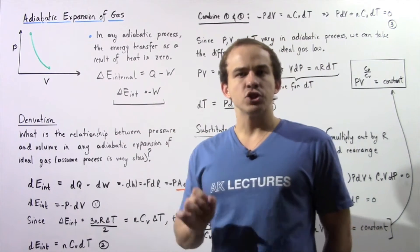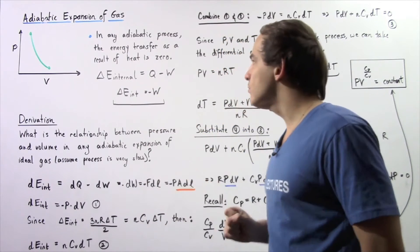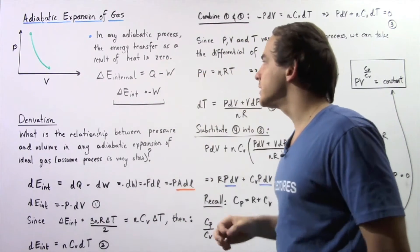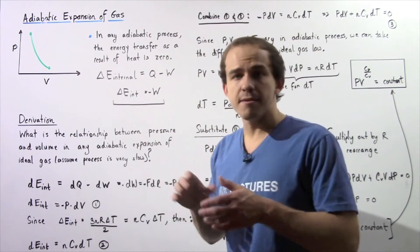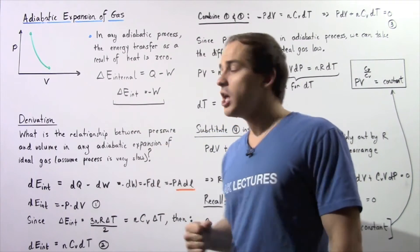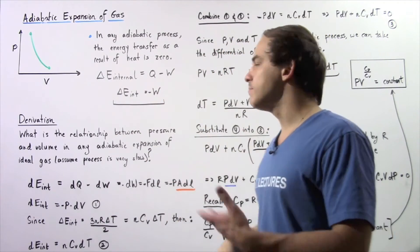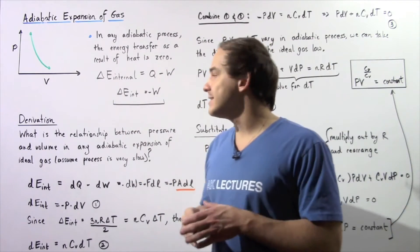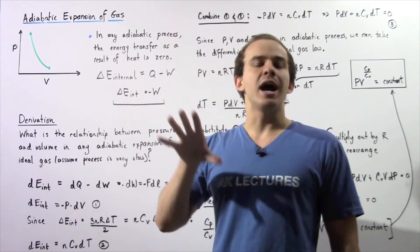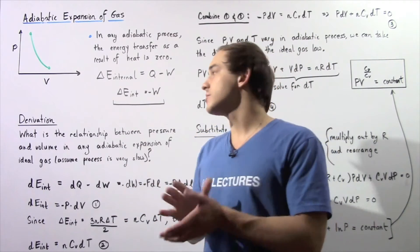Recall that according to the first law of thermodynamics, the change in internal energy of our ideal gas system is equal to the amount of energy that flows into our system as a result of heat minus the work done by the system on the surroundings. Because we're dealing with an adiabatic process, Q is zero, which implies that the change in internal energy is equal to the negative of the work done by the system. This means if internal energy increases, work is done by the surroundings on the system, and if it decreases, work is done by the system on the surroundings.